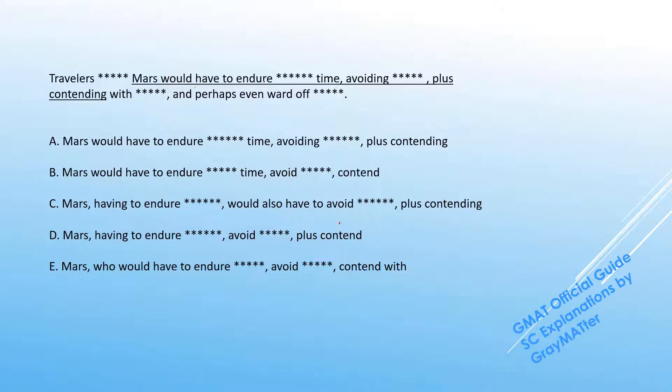The question reads that travelers to Mars would have to endure something, avoiding something, plus contending with, and perhaps even ward off something.